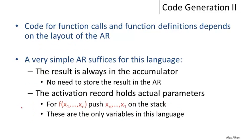The main issue in designing the code generation for function calls and function definitions is that both of these will depend intimately on the layout of the activation record. So really, code generation for function calls, code generation for function definitions, and the layout of the activation record all need to be designed together.